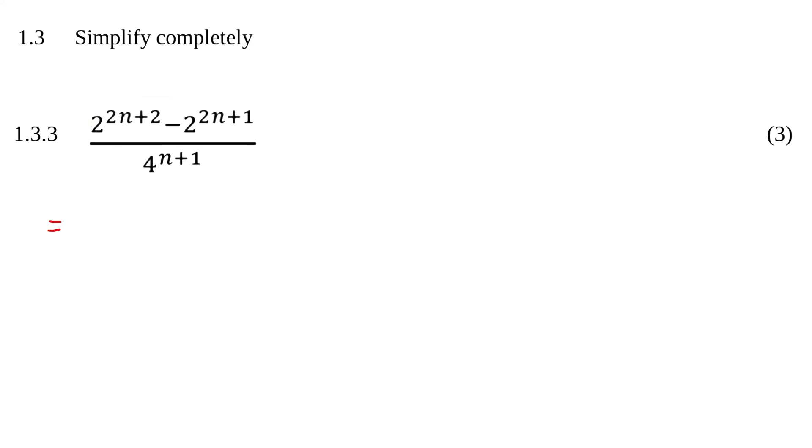The first thing I'm going to do, though, is because I've identified that it's one of these common factor questions, I'm going to split this up. How do I do that? I write it as 2 to the power of 2n and then 2 to the power of 2.